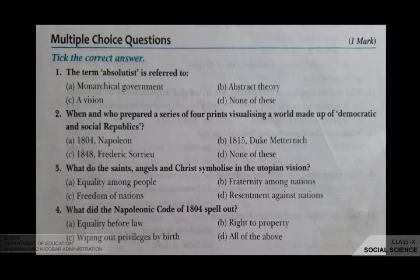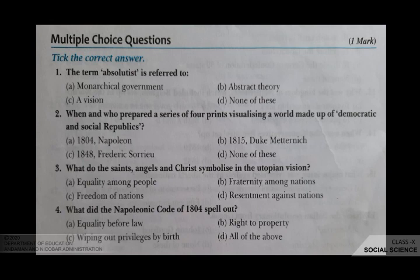The third question is: what do the saints, angels and Christ symbolize in the utopian vision? Your options are A equality among people, B fraternity among nations, C freedom of nations, D resentment against nations. The correct answer is B, fraternity among nations.